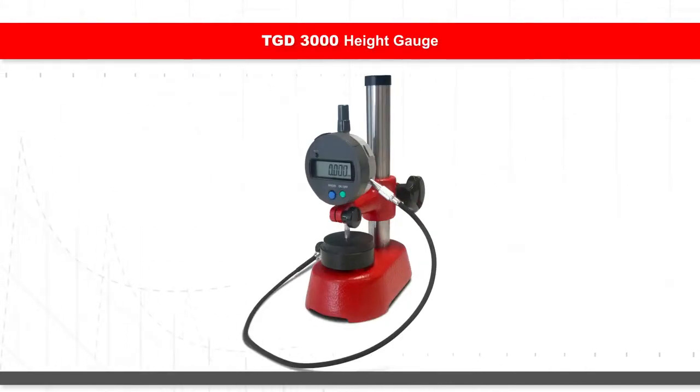The TGD3000 height gauge is also available to measure material's height before and after compression to calculate the material's loss.